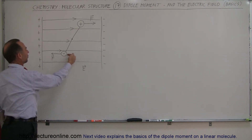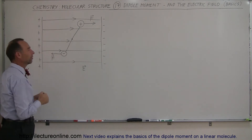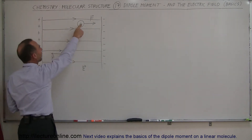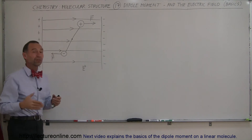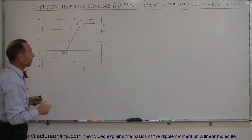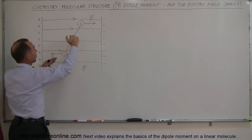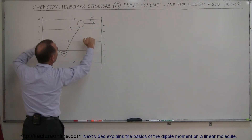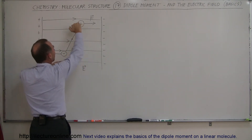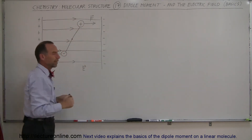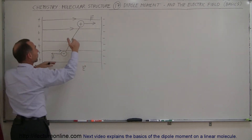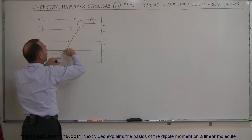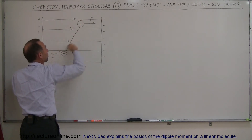The negative charge will feel an attraction towards the positive end of the capacitor plate, and the positive charge will feel a force toward the negative end of the capacitor plate, in such a way that this molecule will straighten itself out depending upon the strength of the dipole — which depends upon the strength of the charge, the amount of the charges, and the distance between them.